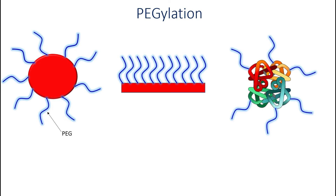PEGylation is a covalent or non-covalent attachment of PEG to particles, surfaces, polymers, or even small molecules in order to modify their properties. This modification is mainly used to improve properties of pharmaceuticals and biomedical surfaces. It offers several advantages such as more favorable pharmacokinetics, better stability, and enhanced therapeutic activity. PEGylation often imparts stealth properties to the object coated with PEG, which means it makes it less visible in a biological environment.